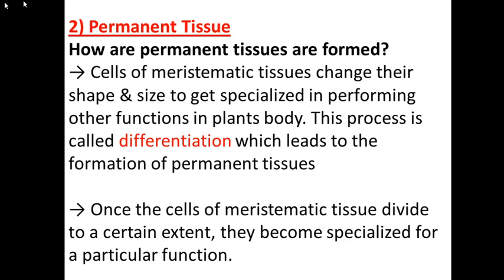Now let's start our third session about permanent tissues. Meristematic tissues are the growing tissues — they have rapidly dividing cells. Opposite to that, permanent tissues do not have dividing cells; these are the non-growing tissues. So if a question asks you to write a note on non-growing tissues, that means permanent tissues.